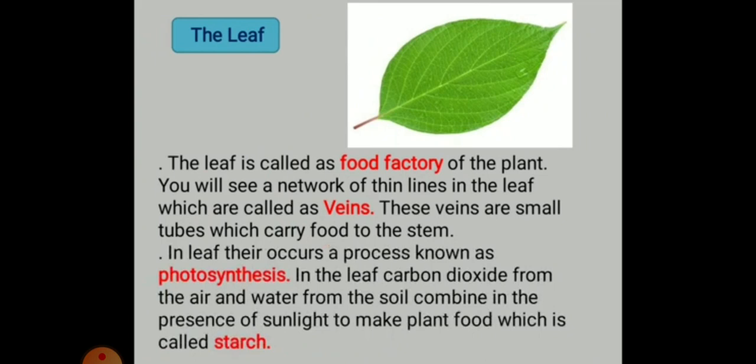In the leaf, a process known as photosynthesis occurs. You have already learned about photosynthesis. In the leaf, carbon dioxide from the air and water from the soil combine in the presence of sunlight to make food, which is called starch.